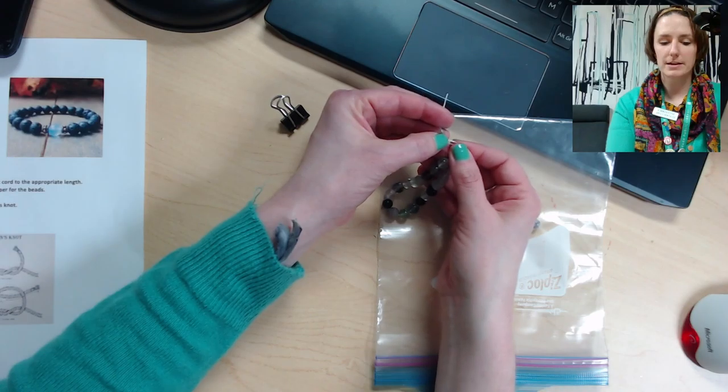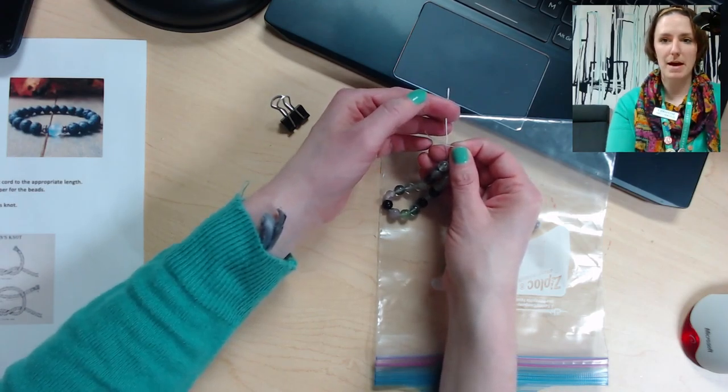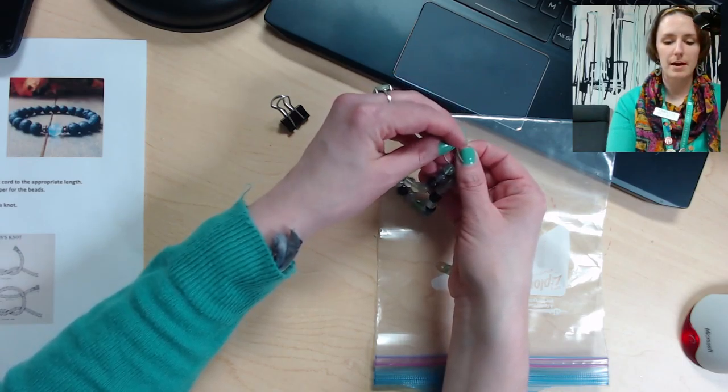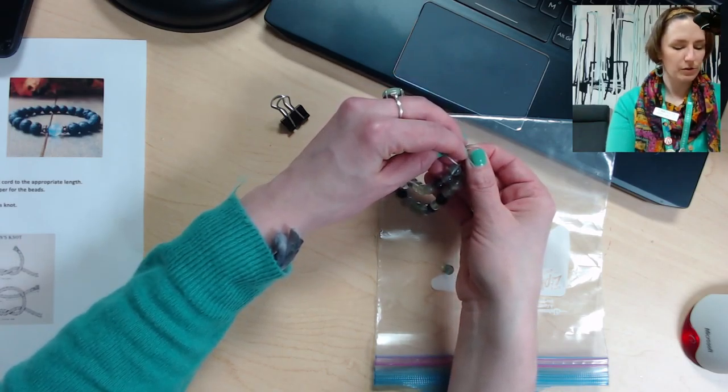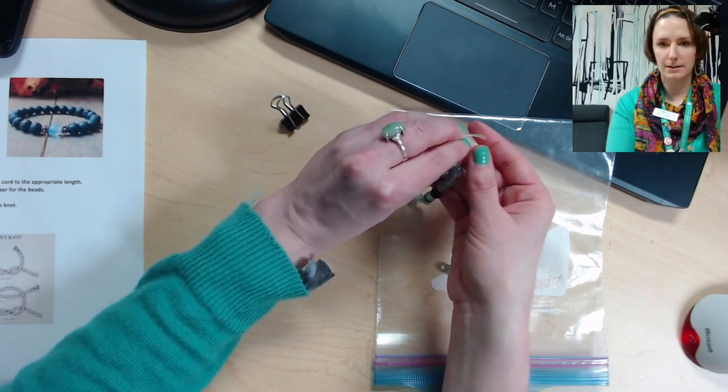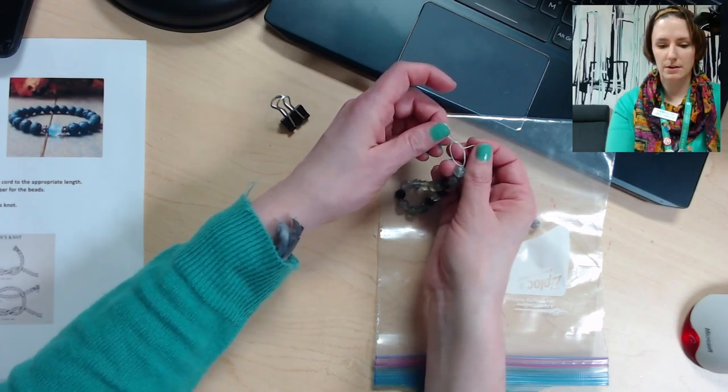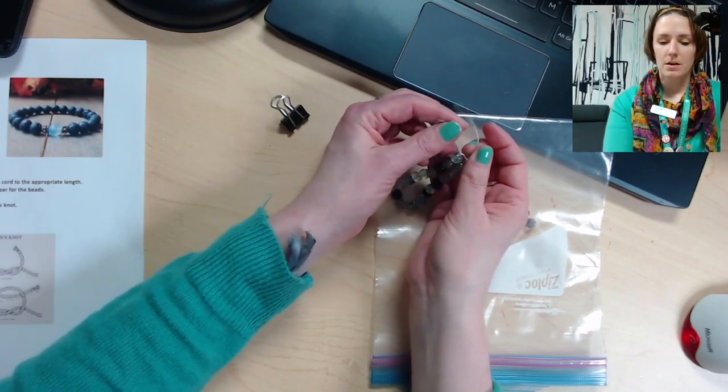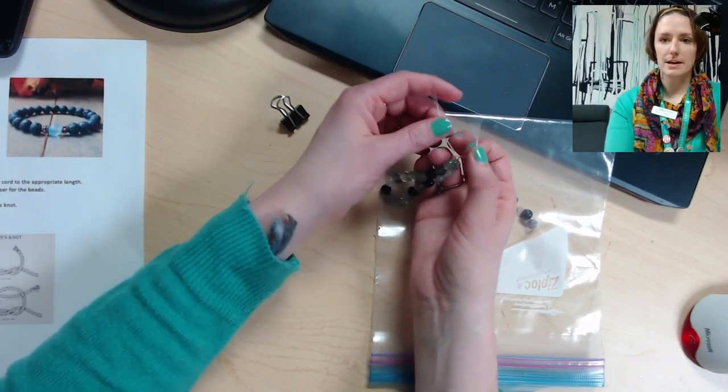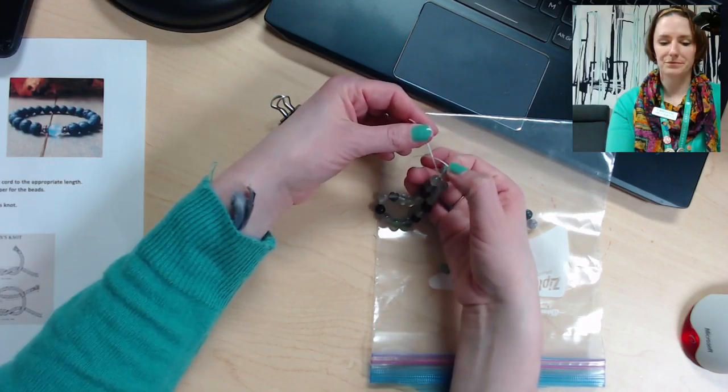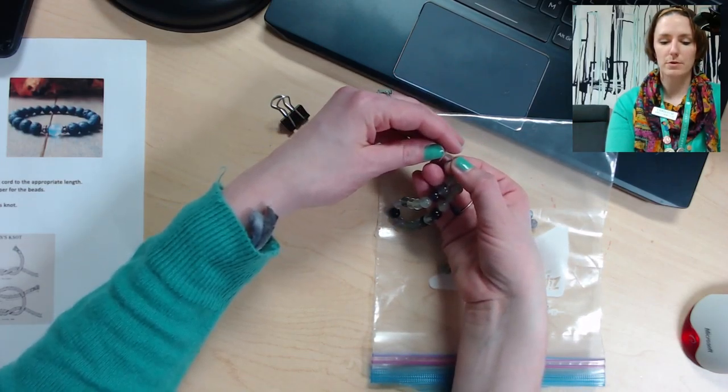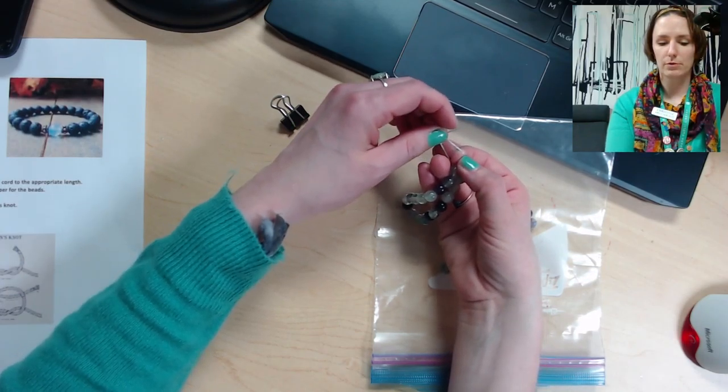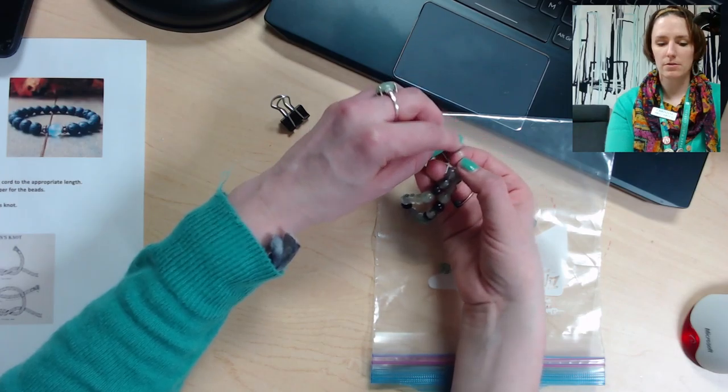And then you're going to tie that knot. So I'm going to do that one more time. So I'm folding the right side down like this, and then you bring the left one up and around and through the hole there.